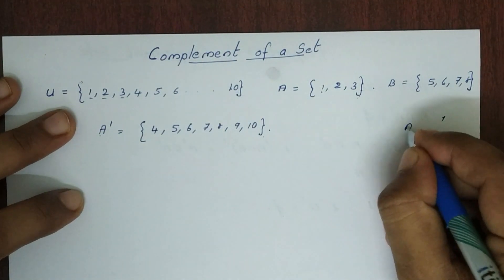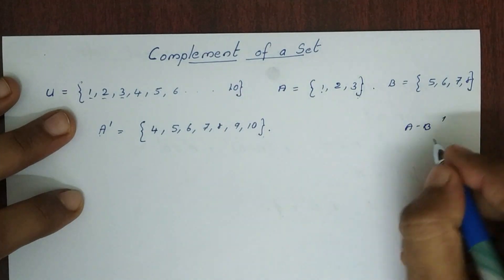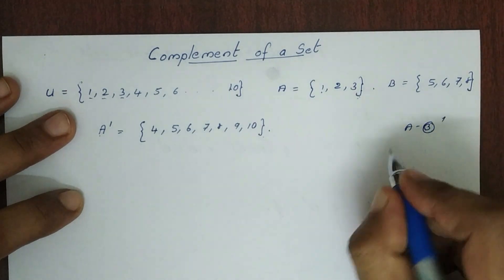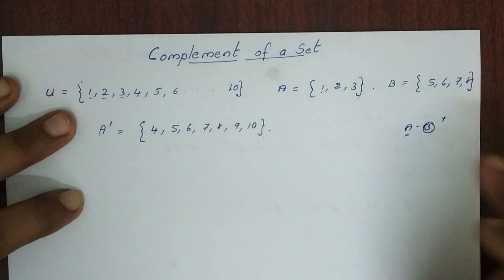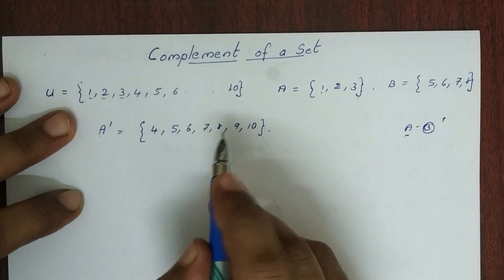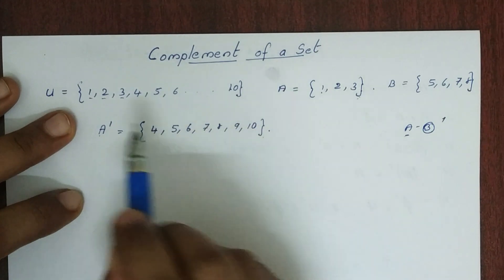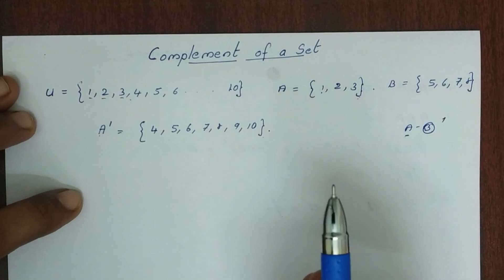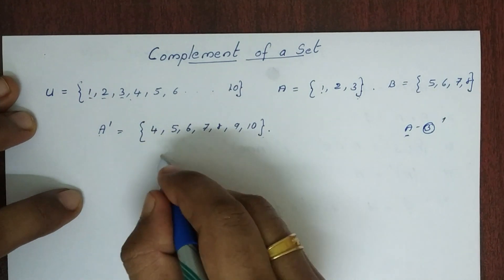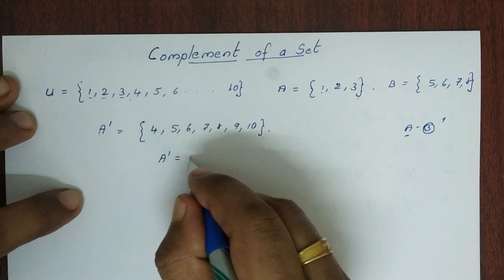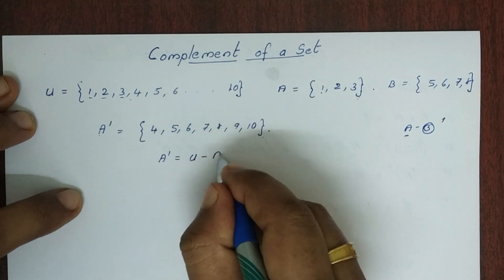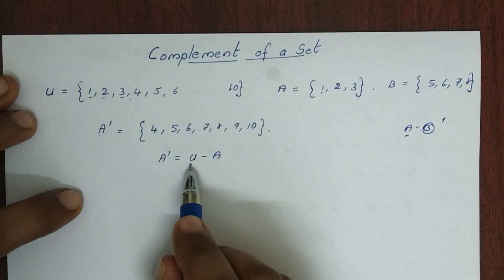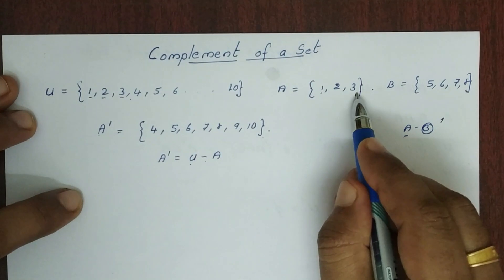Now we have A minus B. Then A minus B is not A. We have a universal set. A complement is equal to U minus A — that is, the universal set minus A.